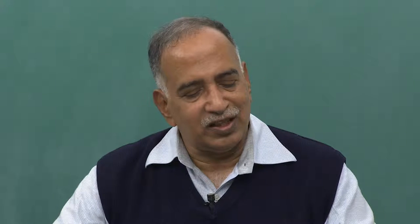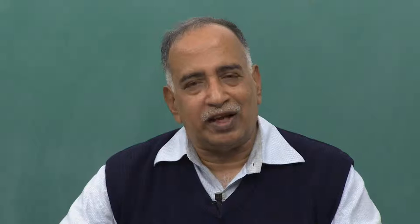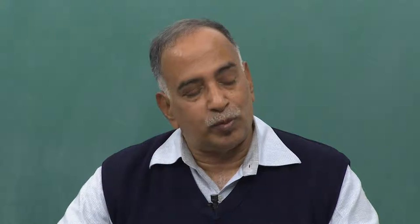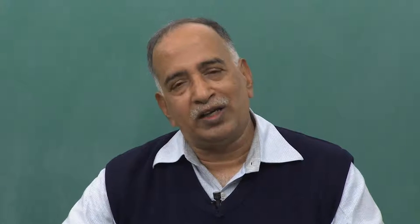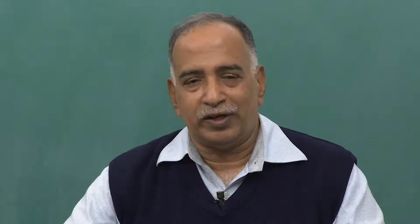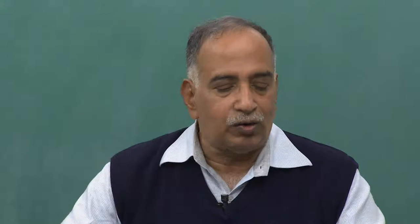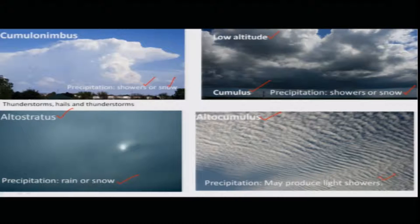What we have seen in the previous slides is how the clouds look and where they are — whether in the lowermost, middle, or upper portion of the troposphere — and what is the probability of precipitation if you see a cloud like a cumulonimbus cloud over your place. The probability of precipitation from such a cloud is very high.